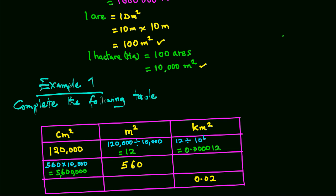And to convert 560 square meters to kilometers, we divide by 1,000,000. So this would give us 0.00056 square kilometers.